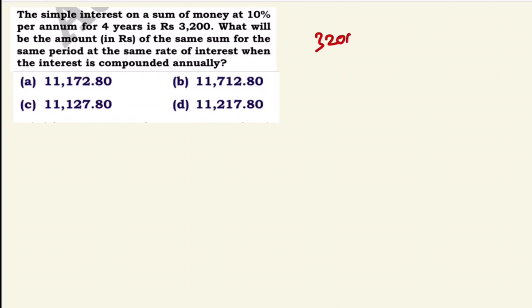First, find the principal. Since 40% equals Rs.3,200 (10% × 4 years), 100% equals Rs.8,000. So principal is Rs.8,000.